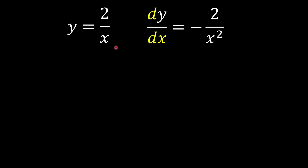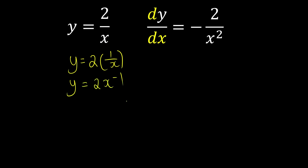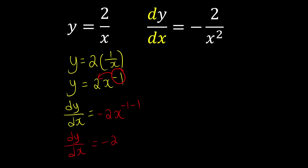Let's do it again using the power rule. We write y equal to 2 times 1 over x, then convert 1 over x to index form as x to the power of negative 1. Then we carry out the power rule: negative 1 goes to the front, giving 2 times negative 1 times x to the power of negative 2. So dy over dx equals negative 2x to the power of negative 2. Since negative 2 looks ugly, we bring it back down: negative 2 over x squared — the same answer as before.